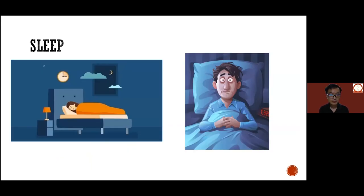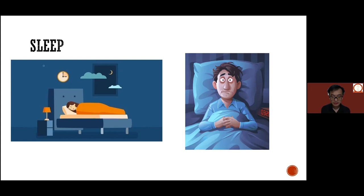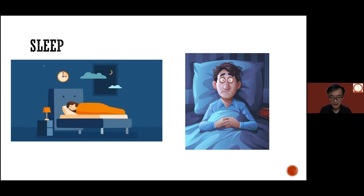For those with depression, sleep problems are common. They may have difficulty falling asleep — taking hours longer than usual. Even when they do doze off, they keep waking up during the night. One of the most recognized features of sleep problems in depression is early morning awakening, where individuals wake about two to three hours earlier than usual and cannot return to sleep despite all attempts. Someone who normally wakes at seven may find themselves awake at four or five, still feeling very tired.